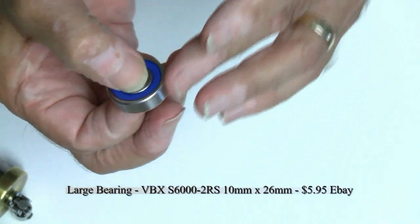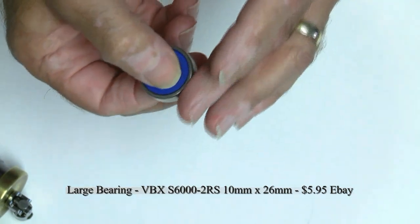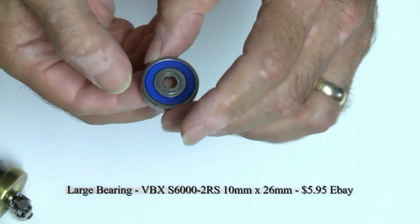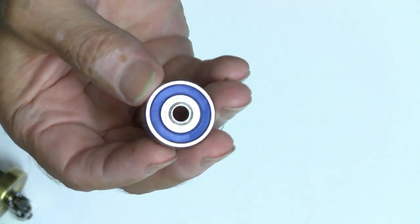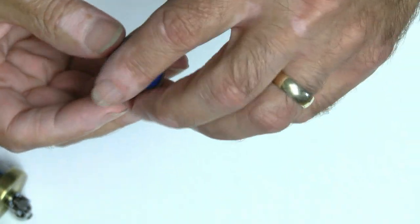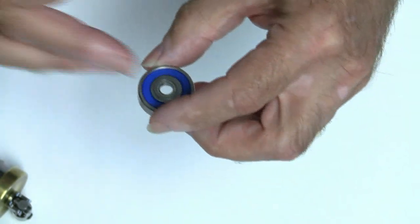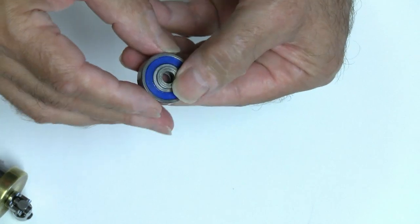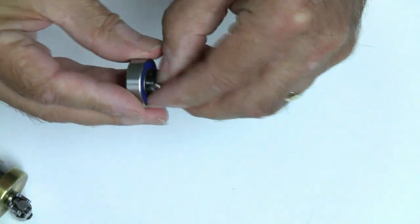The nice thing about it, which I didn't realize until I got it all put together, was that the grease inside of this large bearing is fairly stiff. For roller skates it's no problem, but for this application you want as little resistance as possible.